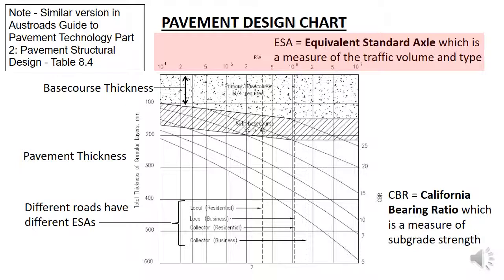The calculation of ESA is beyond the scope of this course, but this chart provides typical ESAs for different roads, shown as vertical dashed lines on the chart. Local residential roads have the lowest ESA, as they have a low number of vehicle movements and hardly any trucks using them. This compares to a business area collector, which would provide access to business areas as well as through traffic. It would have a high number of vehicles and more heavy vehicles such as trucks delivering materials to businesses, therefore it has a higher ESA.